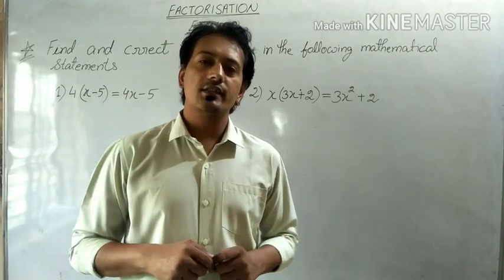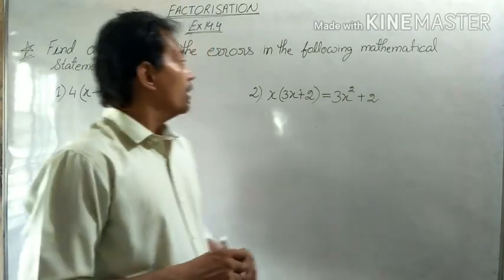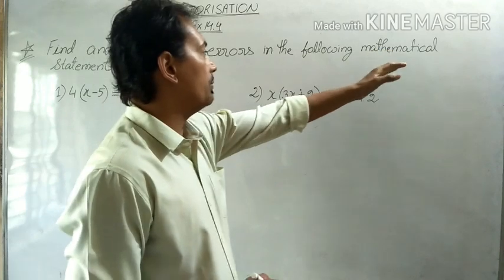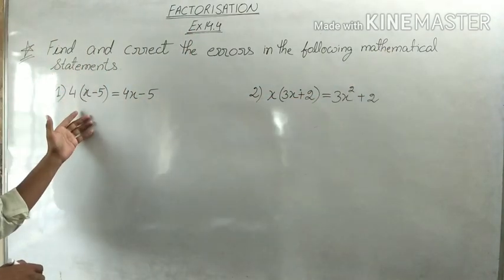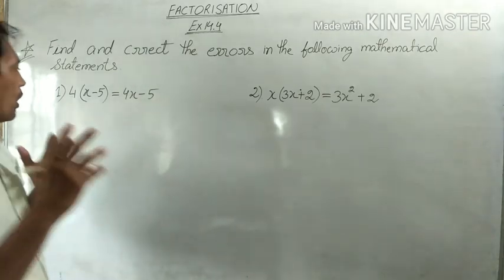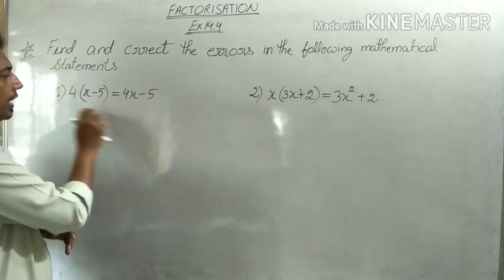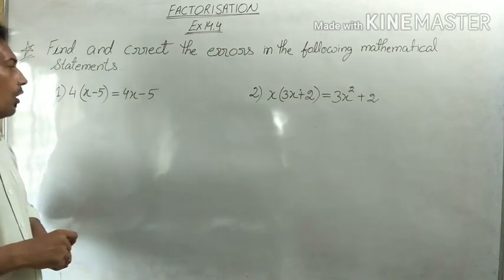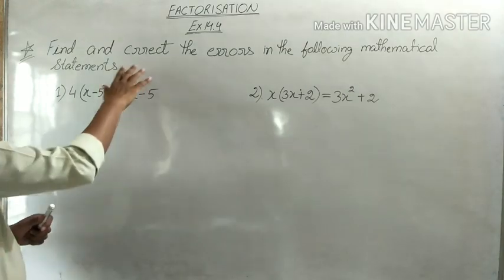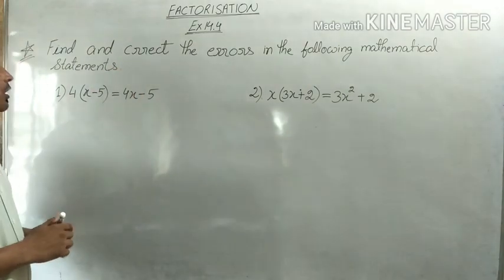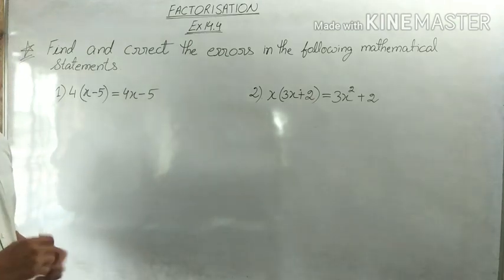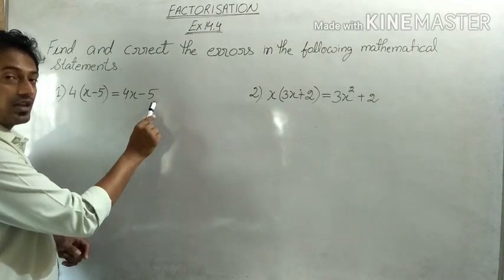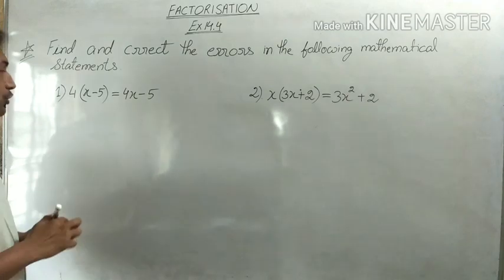Good morning students, today we will be starting exercise 14.4. The first question says: find and correct the errors in the following mathematical statements. We have been given some statements, each with a left hand side, a right hand side, and an equal to sign in between. We say a statement is correct if the left hand side equals the right hand side. Let's check each one.